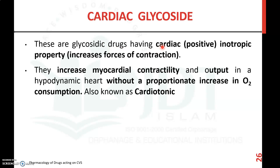Cardiac glycosides are glycoside drugs which have cardiac inotropic property. Inotropic property is the property of the drug to increase the force of contraction. The cardiac glycosides will increase the myocardial contractility and cardiac output in a hypodynamic heart without a proportionate increase in oxygen consumption. That is why they are known as cardiotonics.